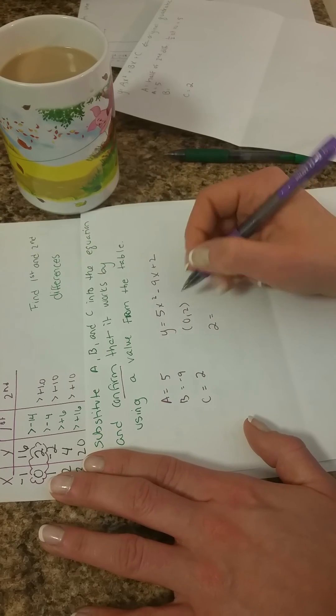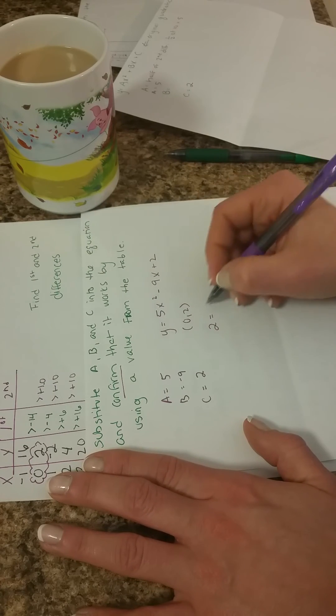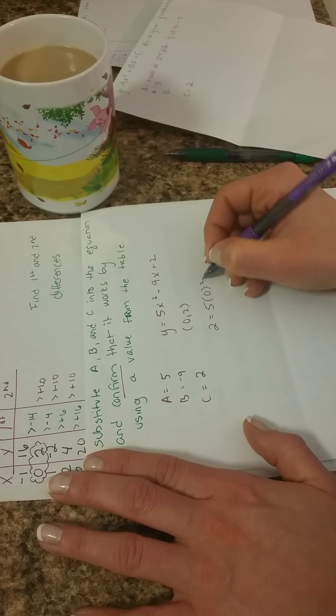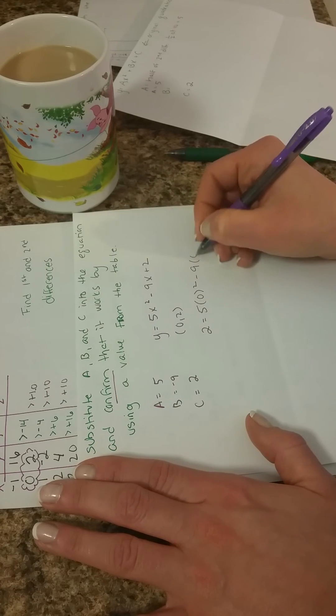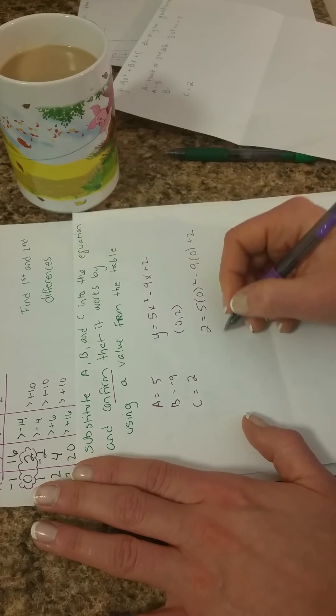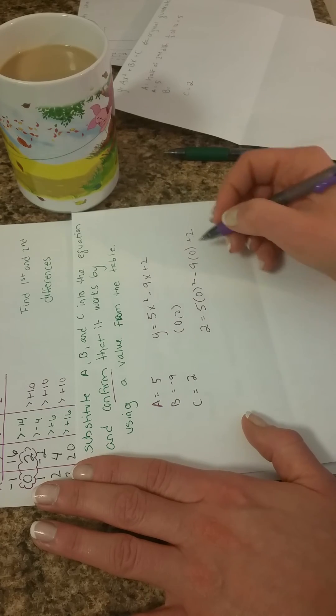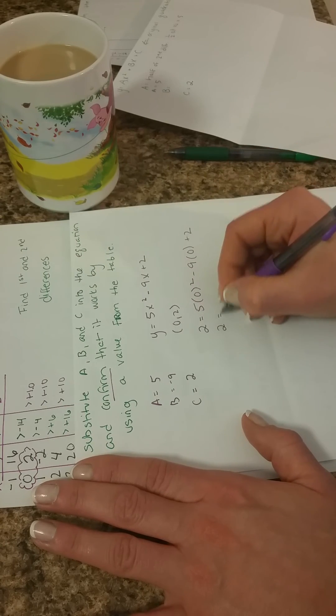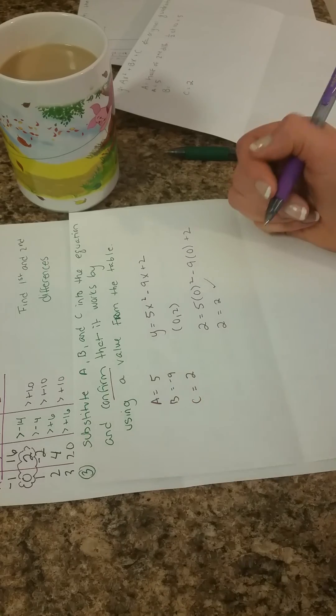So we're going to substitute 0, 2 into our equation. So it would be 2 equals, well, 5 times 0 squared minus 9 times 0 plus 2. So anything times 0 is 0, same here. So that would be 2 equals 2, and that is accurate.